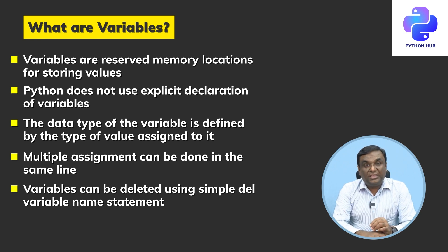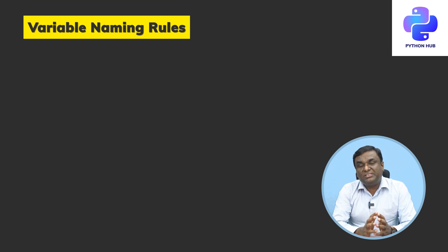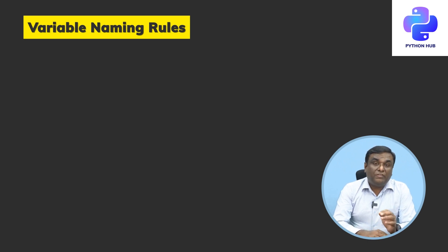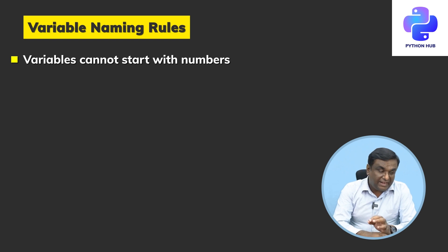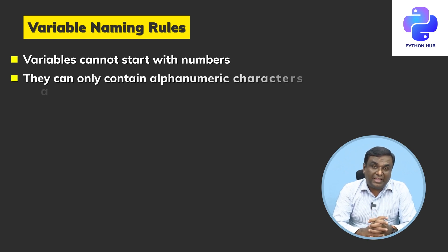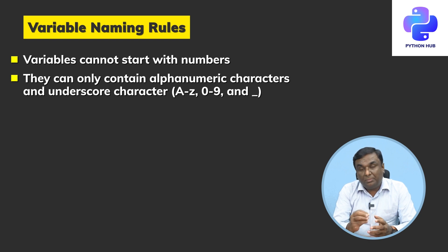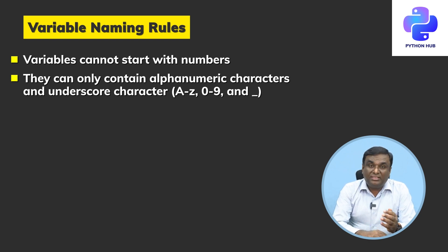When working on projects, how variables are named says a lot about your coding standards and professionalism. First, variables cannot start with numbers. Second, they can only contain alphanumeric characters and underscores. For example, if you are storing a city name you can call it city_underscore_name, or person_underscore_name — you can define it that way.